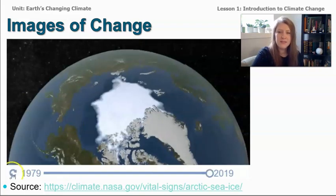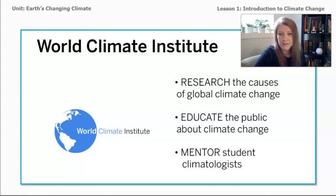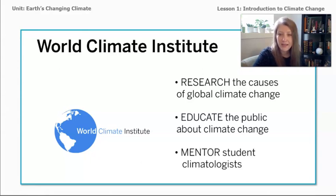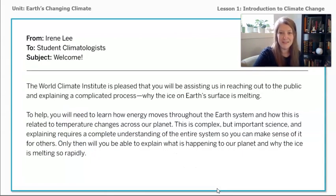So what does this tell us? Your job during this unit will be to take on the role of a student climatologist. You'll be working for an organization called the World Climate Institute, and you're going to learn about and educate the public about what's happening in this Earth system — what's happening to the ice. The data you'll analyze is real data collected by real scientists who work for, for instance, the National Oceanic and Atmospheric Administration, or NOAA. Even though the World Climate Institute is a fictional organization, it's based off real ones so you can take on the role of what a scientist really does. Let's get our first email from the World Climate Institute — this comes from Irene Lee, and the subject is welcome.